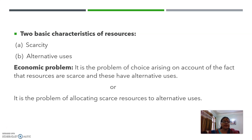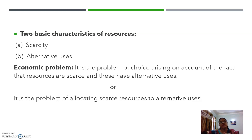Resources के दो basic characteristics होते हैं। पहला — scarcity: demand for resources is greater than its supply. दूसरा — alternative uses: एक resource को हम कई जगह इस्तेमाल कर सकते हैं। Example: एक land है — उस पर हम गेहूं cultivate कर सकते हैं, धान produce कर सकते हैं, या बाग लगा सकते हैं। दूध की कितनी uses हैं — direct पी सकते हैं, दही जमा सकते हैं, पनीर, मिठाई, खीर बना सकते हैं।